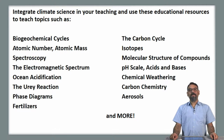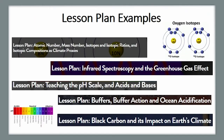Additional topics include pH scale, acids and bases, ocean acidification, chemical weathering and the URI reaction, carbon chemistry, phase diagrams, aerosols, fertilizers, and many more. These are lesson plans that allow you as a chemistry teacher to teach topics in the chemistry undergraduate syllabus through the use of climate-related examples, case studies, and activities. We will show you lesson plans on atomic number, mass number and isotopes, infrared spectroscopy, the pH scale and acids and bases, buffers and buffering action, and on black carbon and its impacts on climate.